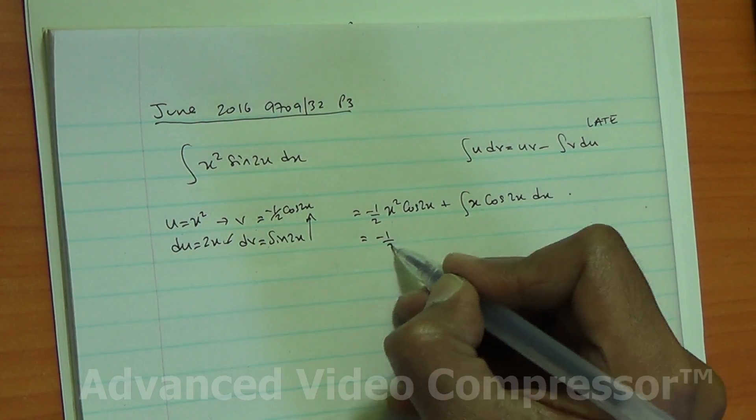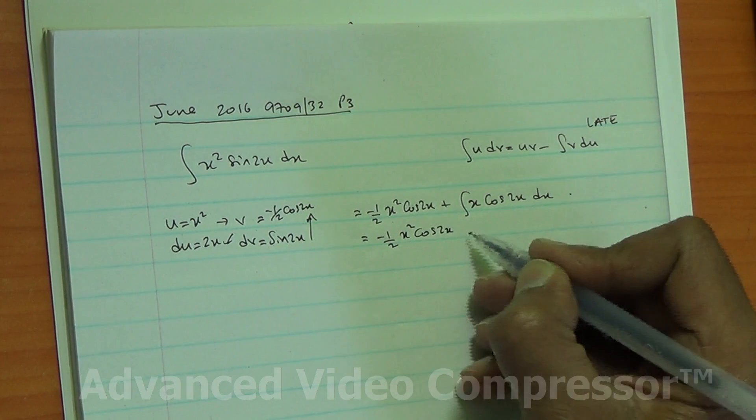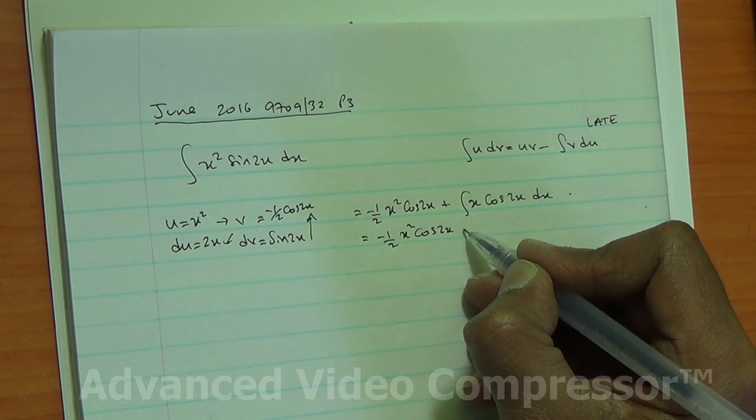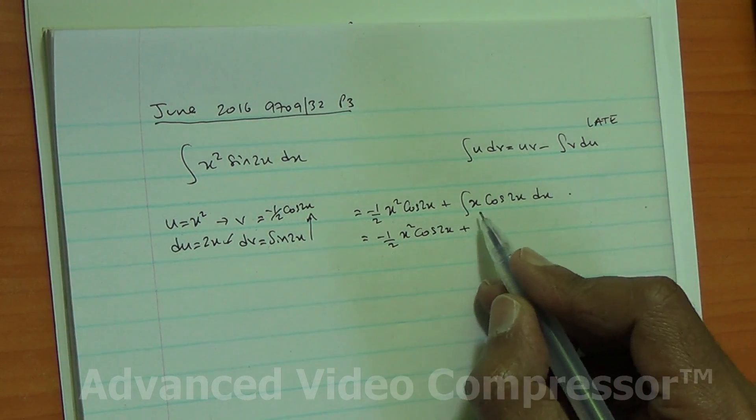So I've got minus half x squared cos of 2x, now plus, this is another integration by parts.